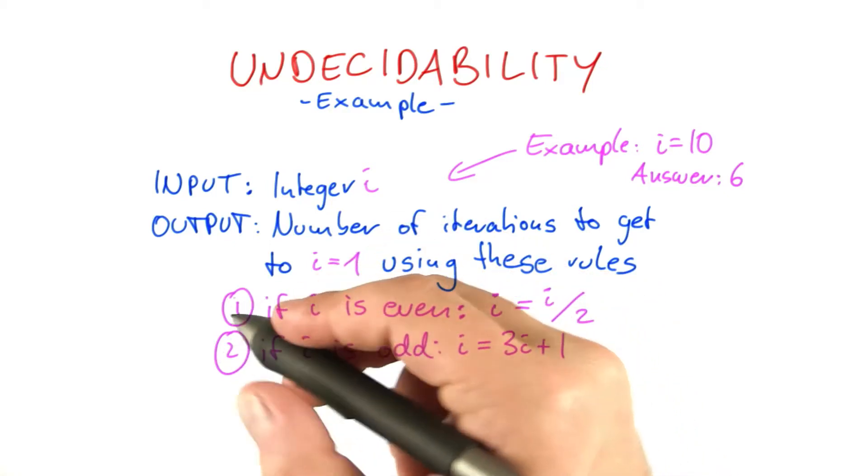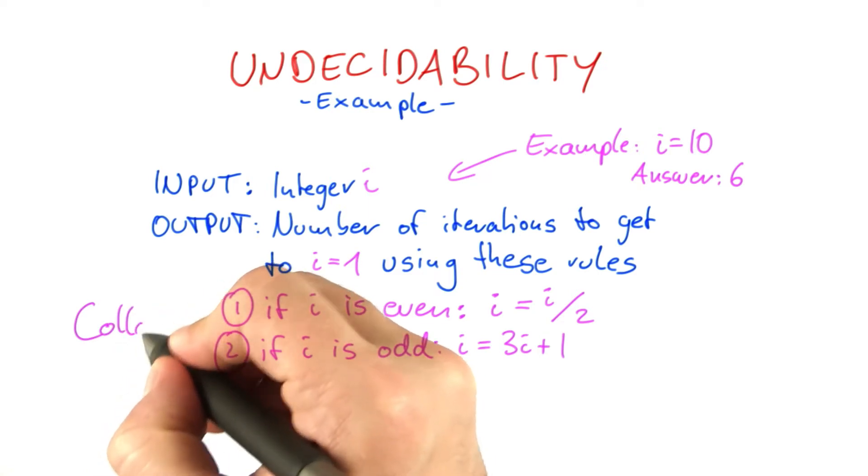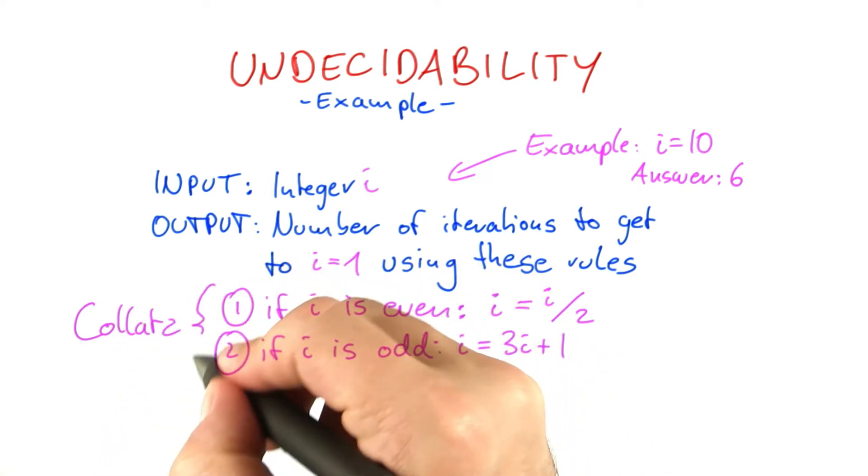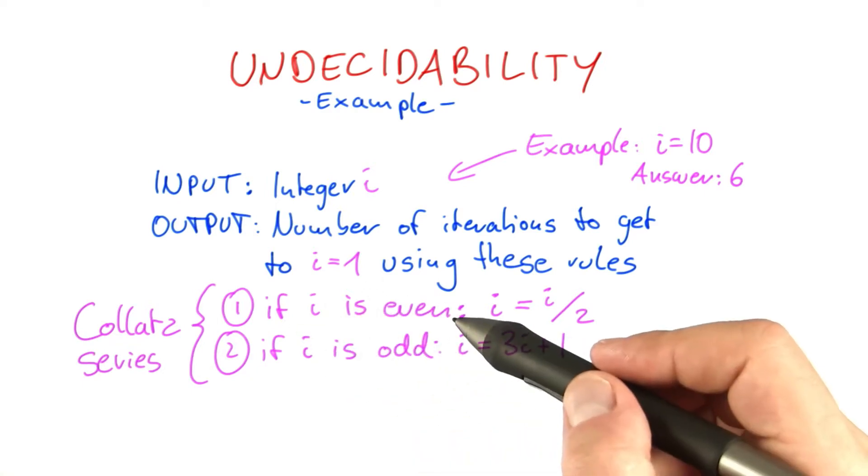These two rules here form what is known more formally as the Collatz series, named after the German mathematician Lothar Kollatz. And it behaves somewhat erratic, as I think you've seen with a program.